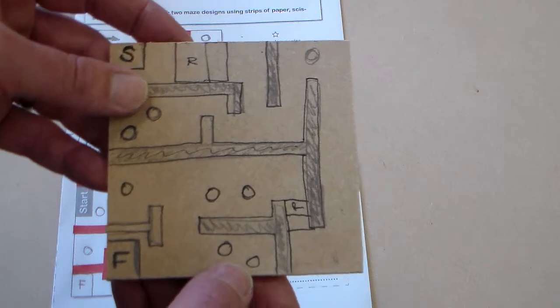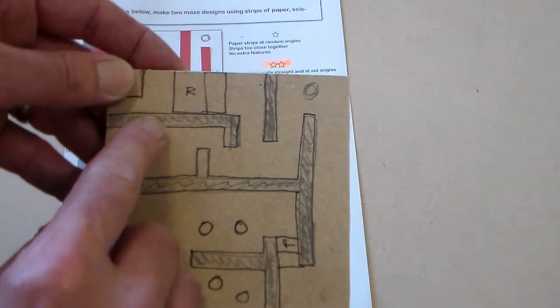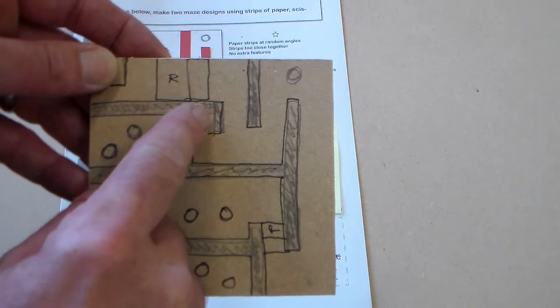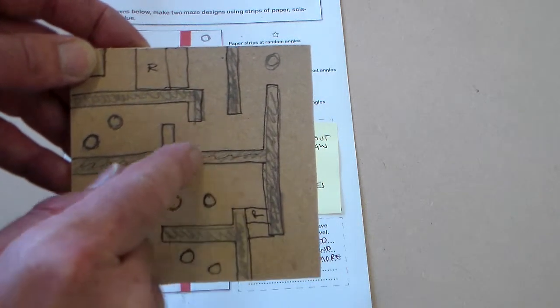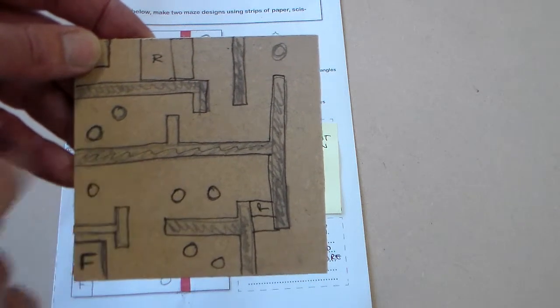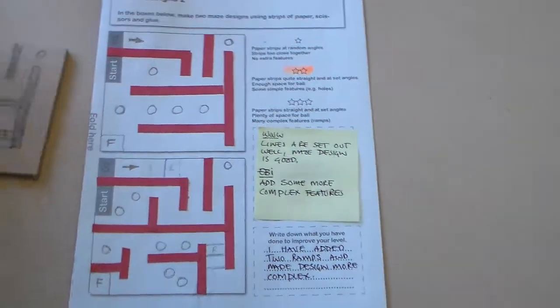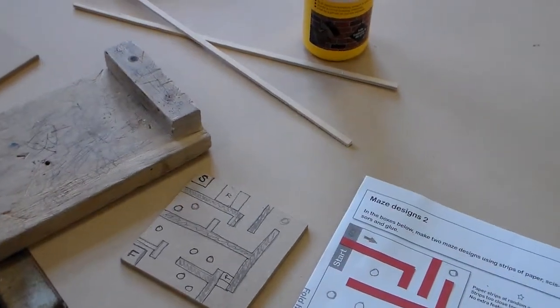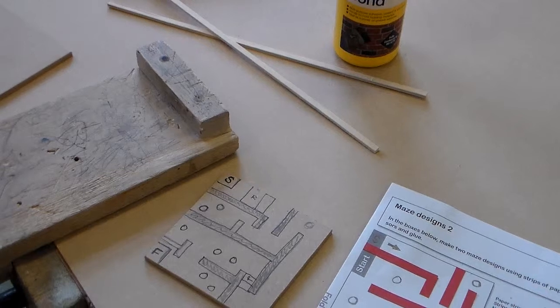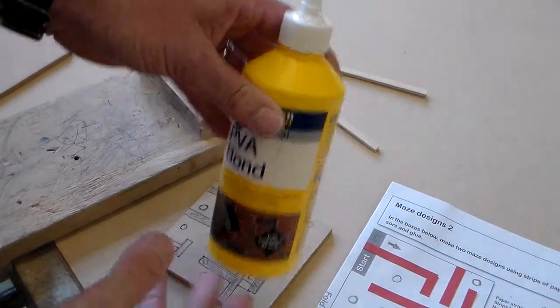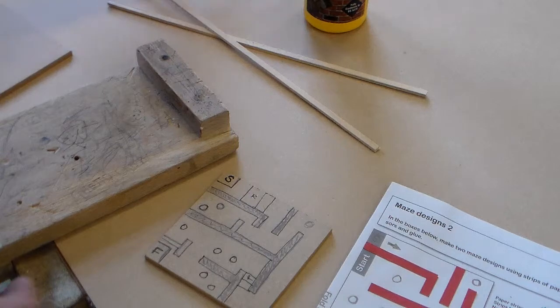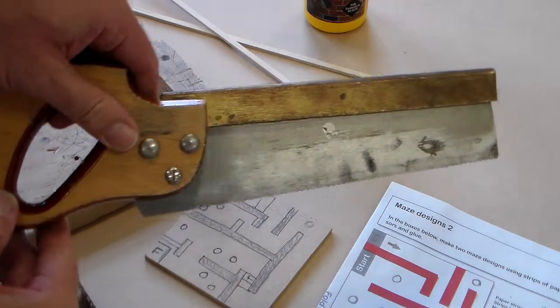So the first thing we're going to do is start to cut the plywood strips for the walls of our maze. What we need for this is some plywood strips, some PVA glue and a tenon saw.